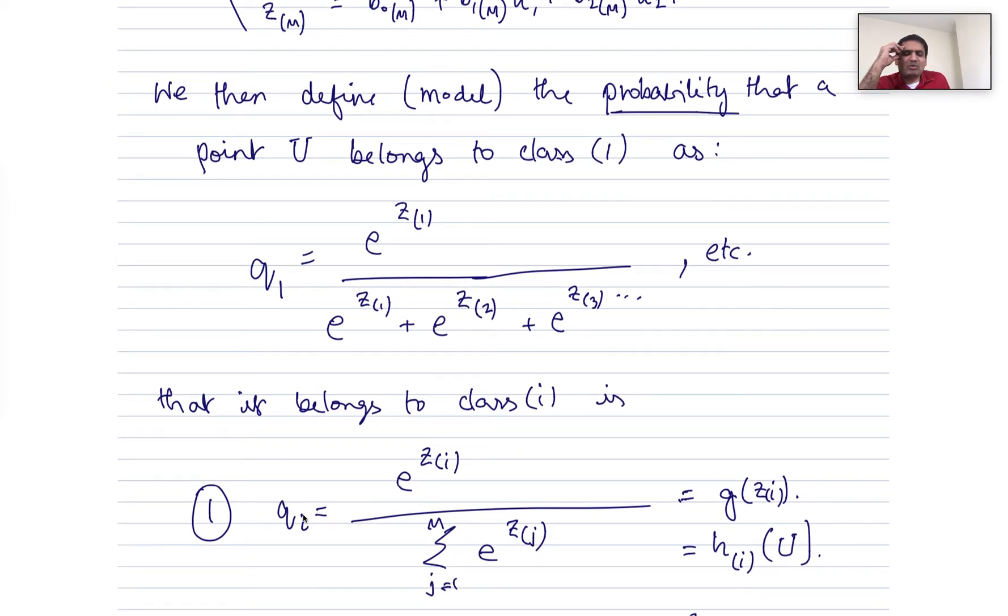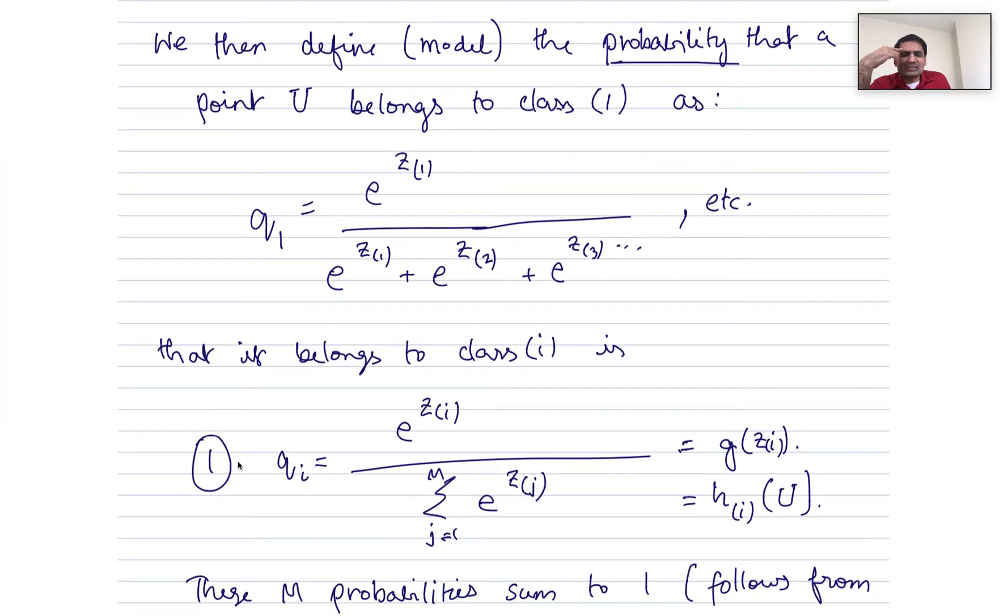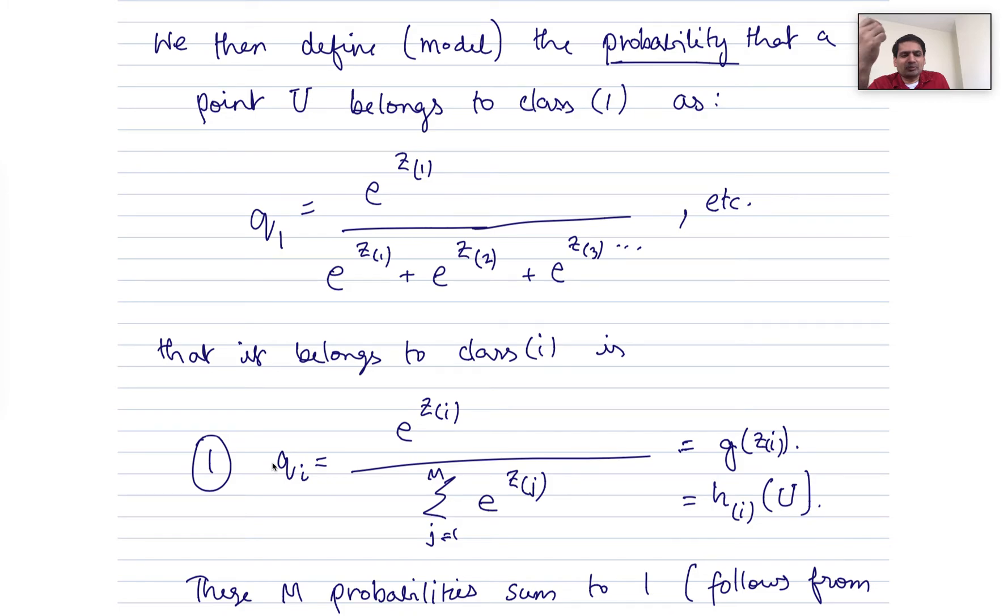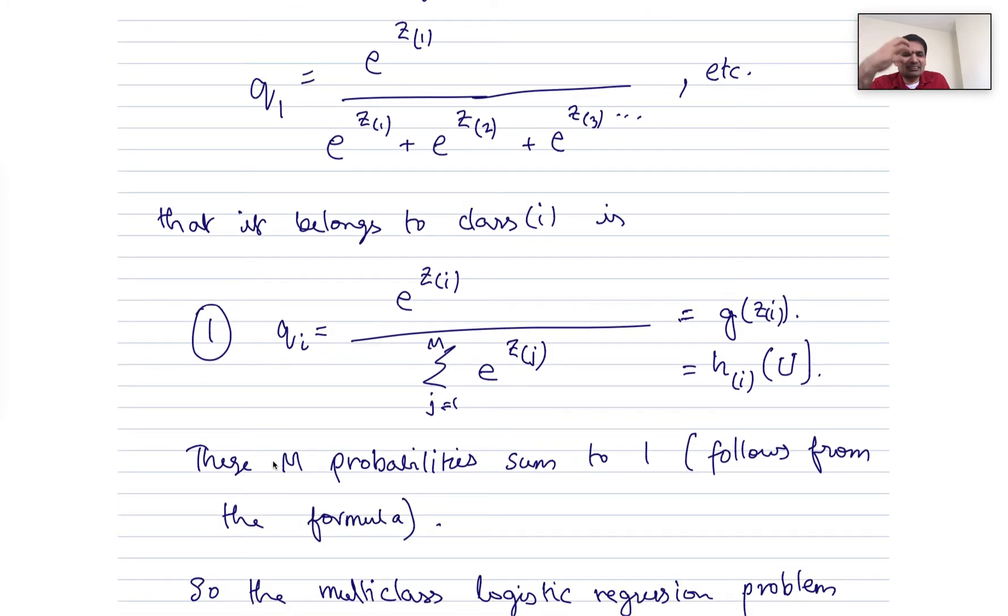More generally, we are saying that the probability, I'm going to call that qi, that it belongs to class i, is e to the zi divided by e to the z1 plus e to the z2 plus e to the z3, etc., like sum over all e to the zs. So this is the probability that a given data point belongs to class i. So at least this is the model. So there are m probabilities.